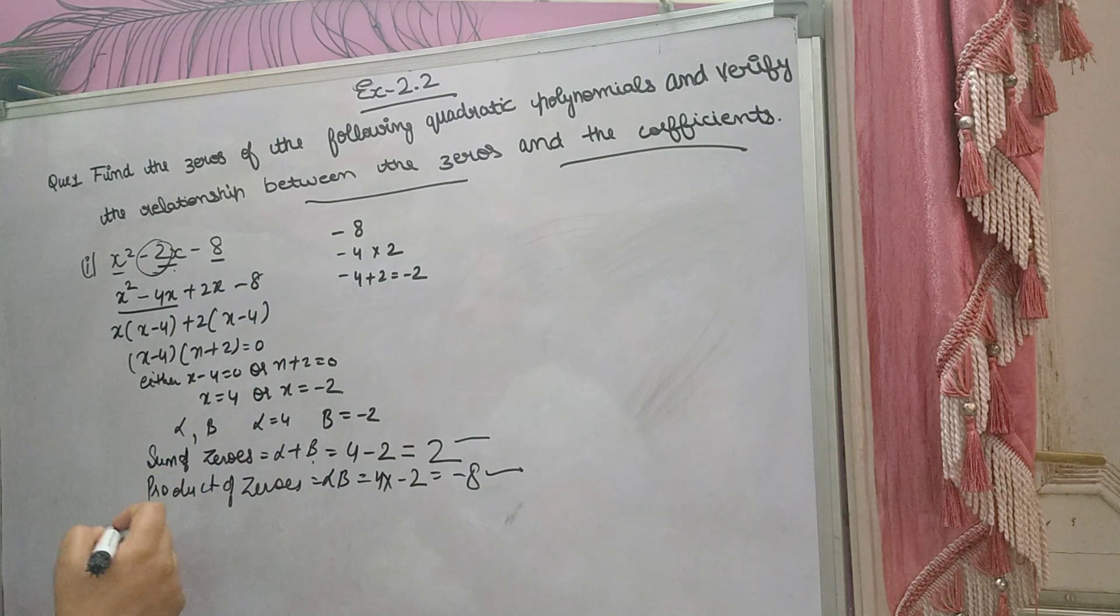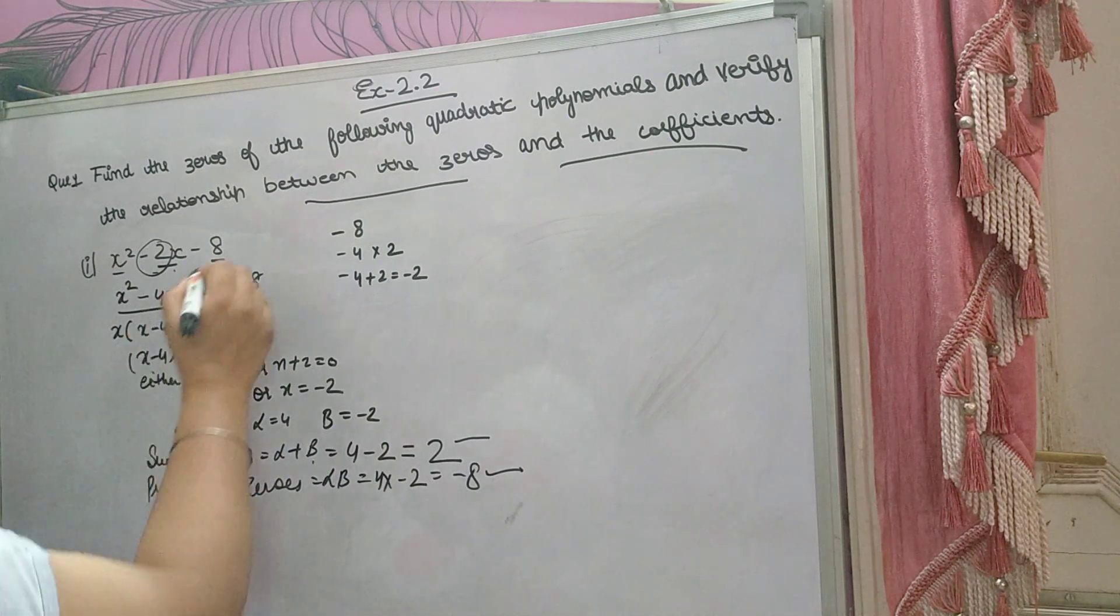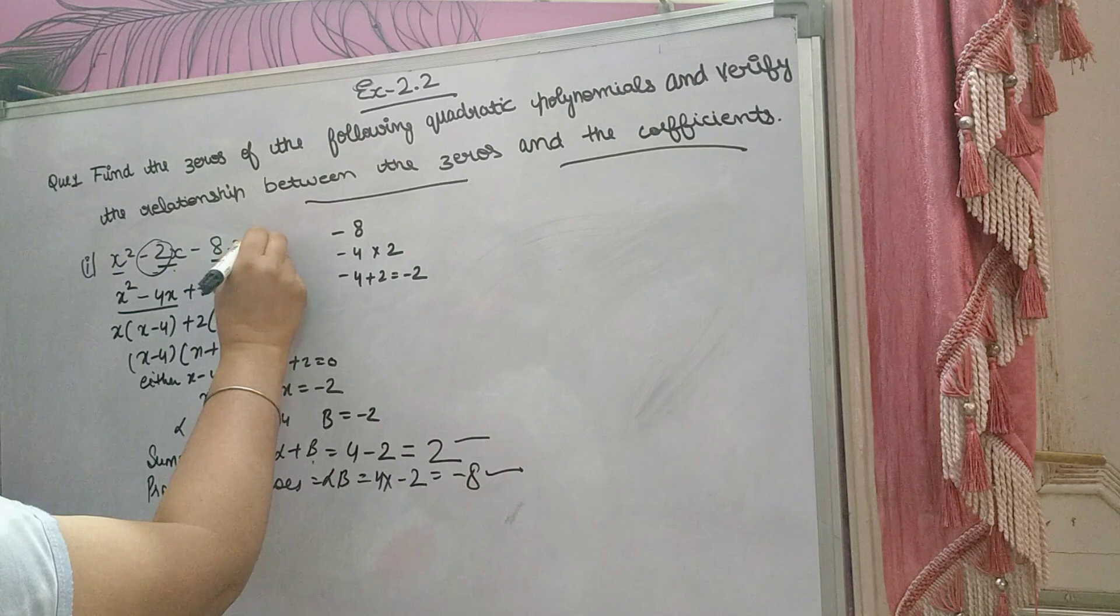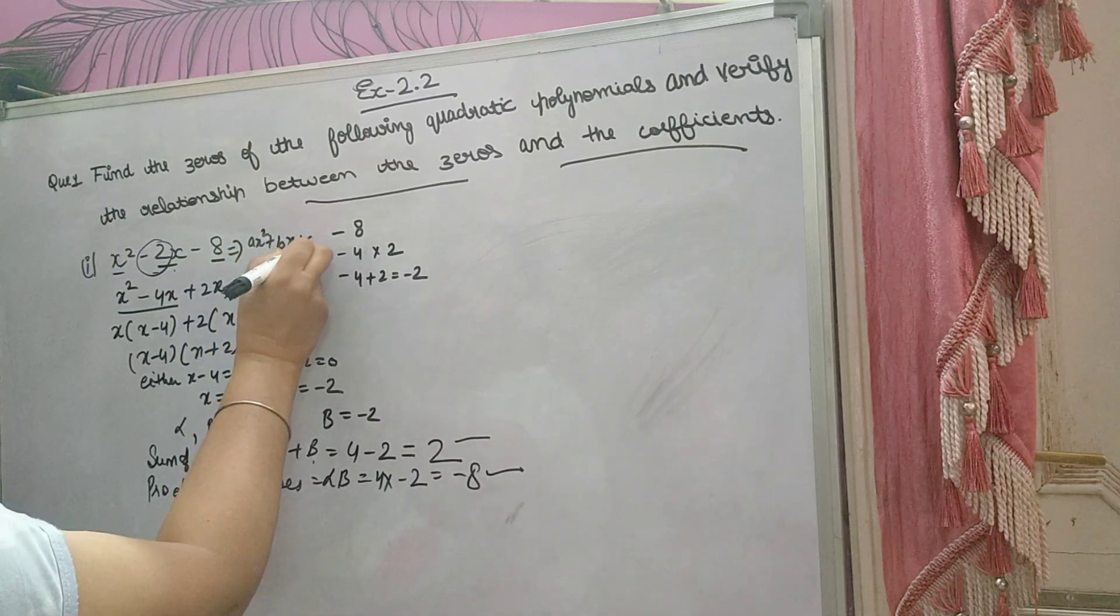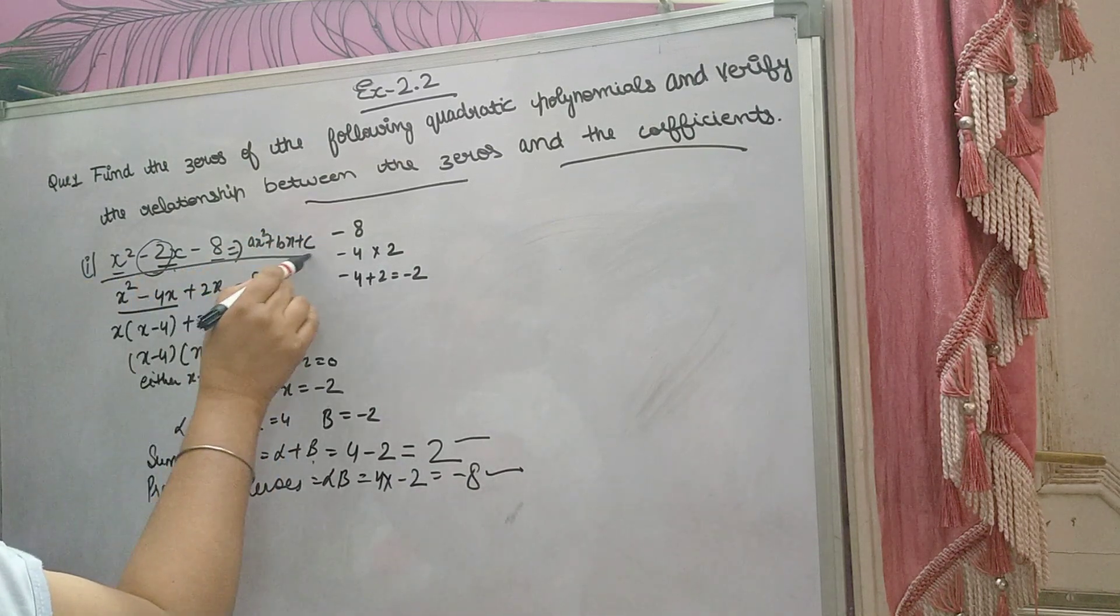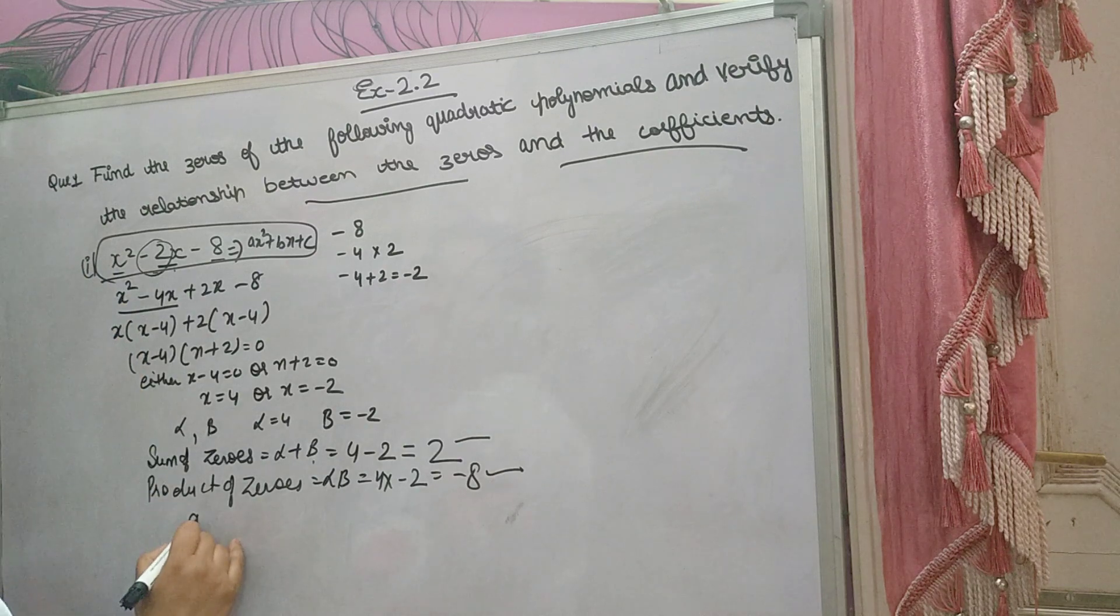Now what is the relationship between the zeros and coefficients? You have to compare this equation by ax squared plus bx plus c. On comparing this equation, you will get a is equal to 1,